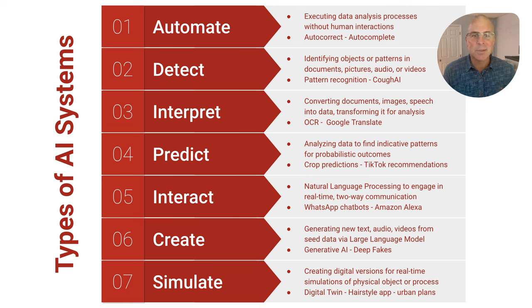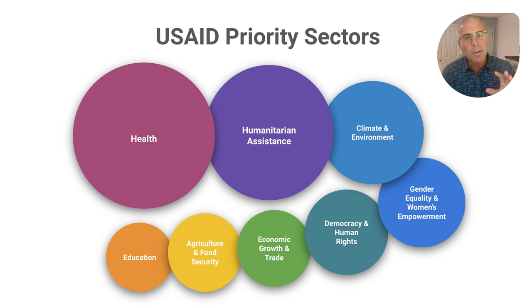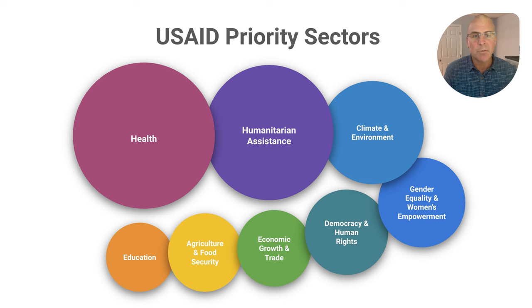Maybe we should get ChatGPT to categorize them all. I did ask ChatGPT to categorize the main focus areas of USAID according to their fiscal 2024 budget. Here are the sectors of focus, with each bubble generally representing the budget size. As you can see, health and humanitarian response dominate the list. I was surprised to see gender so high and education so low. I used this ordering and found 18 different ways that we are already increasing impact in international development and humanitarian relief using AI solutions.